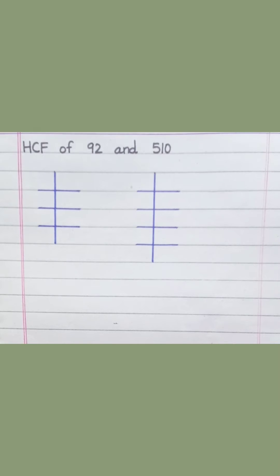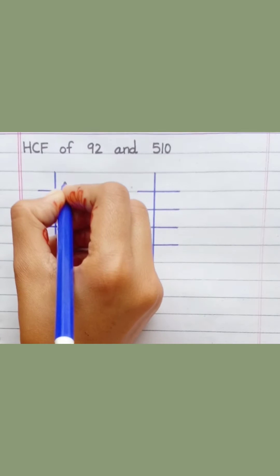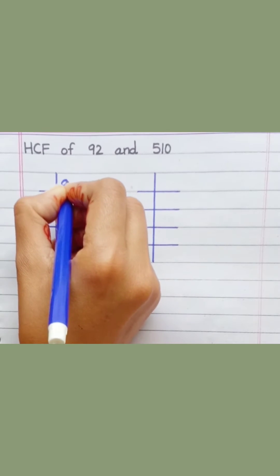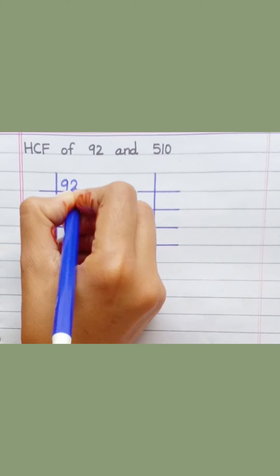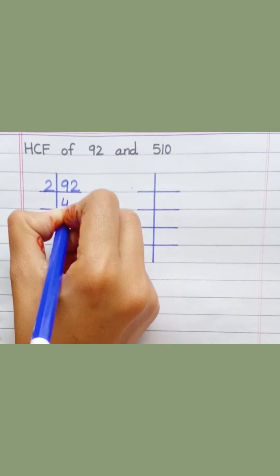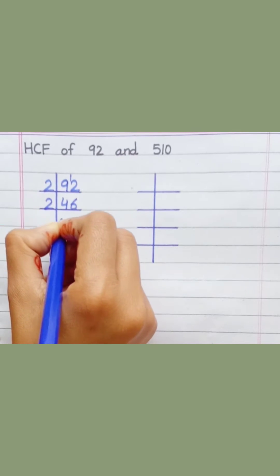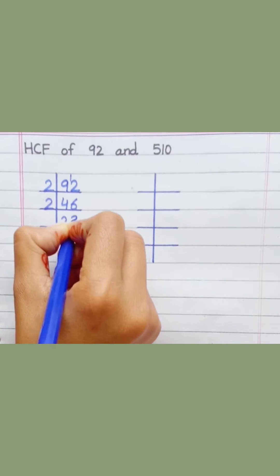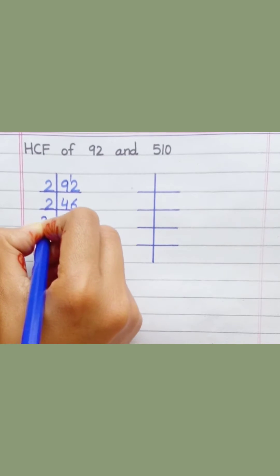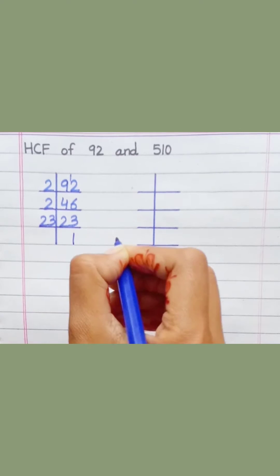HCF of 92 and 510. First, factorizing 92: 2 4s are 8, 2 6s are 12, 2 2s are 4, 2 3s are 6, 23 1s are 23.